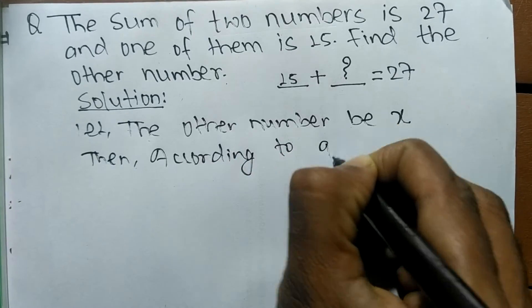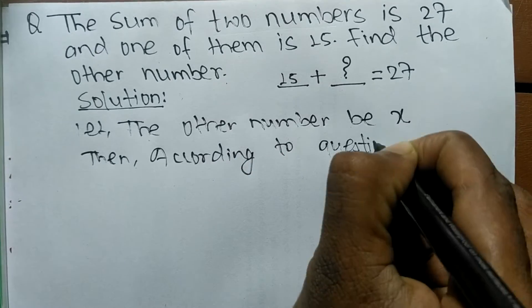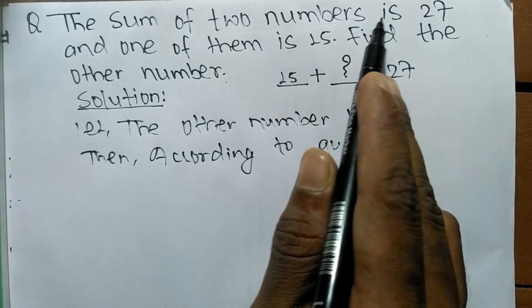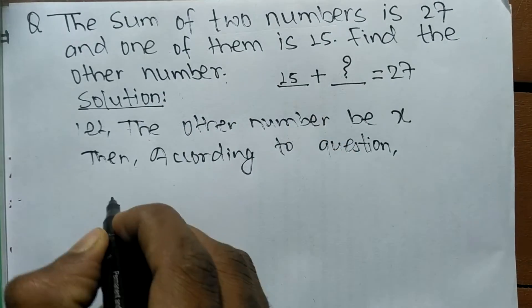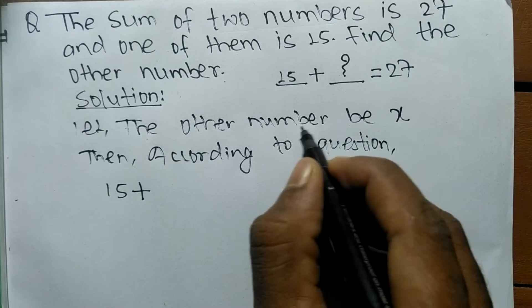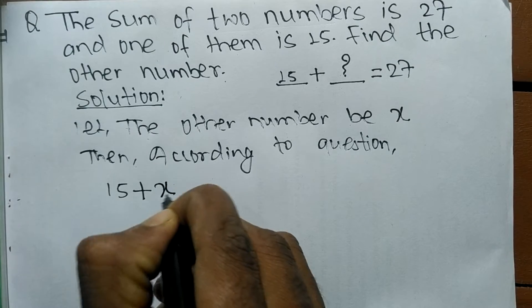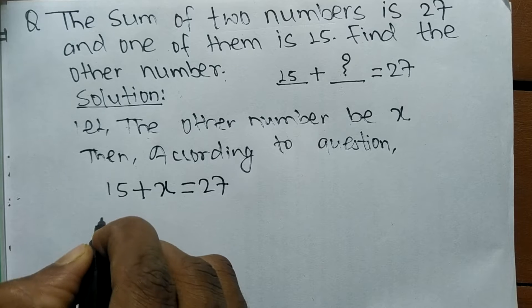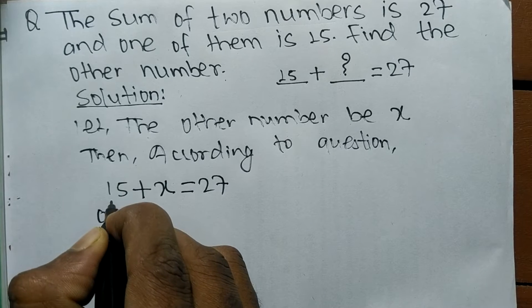According to the question, the sum of two numbers is 27. The first number is 15 plus the second one, which we let be x, and their sum is equal to 27. So we write: 15 + x = 27.